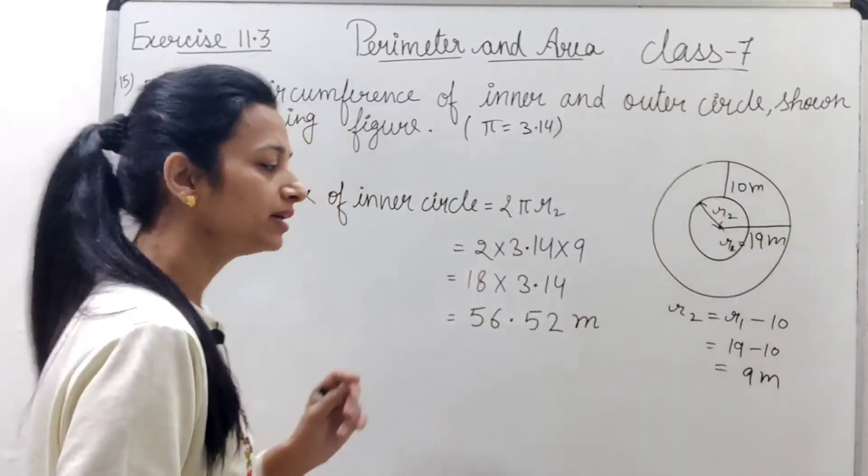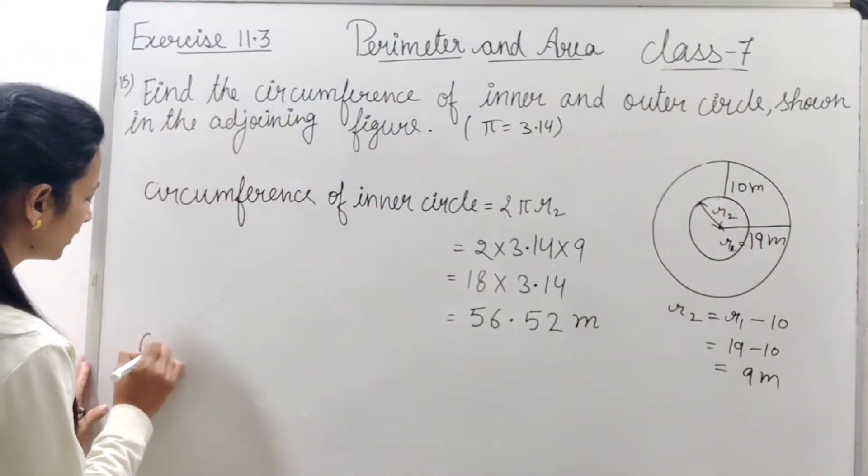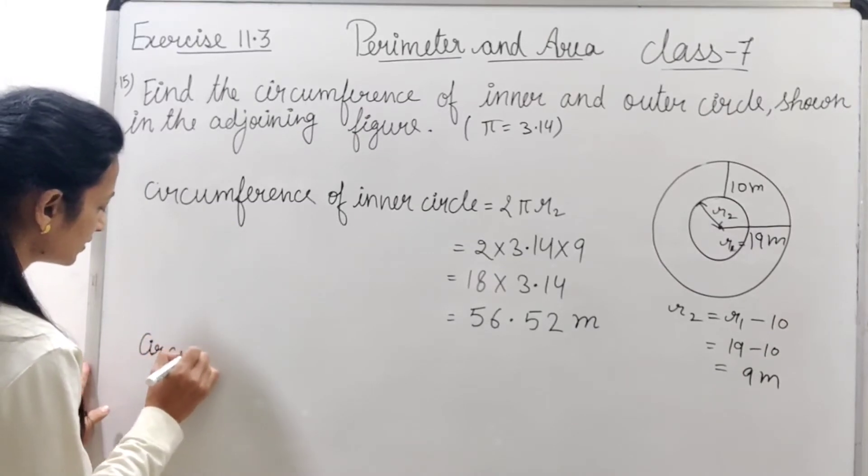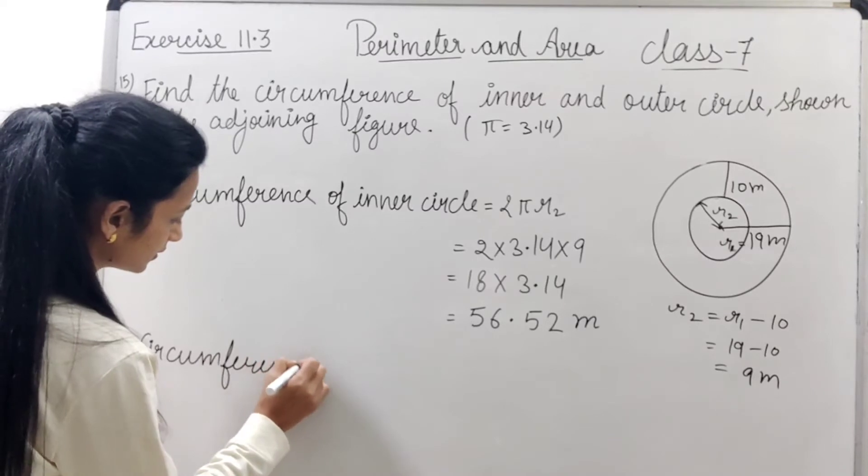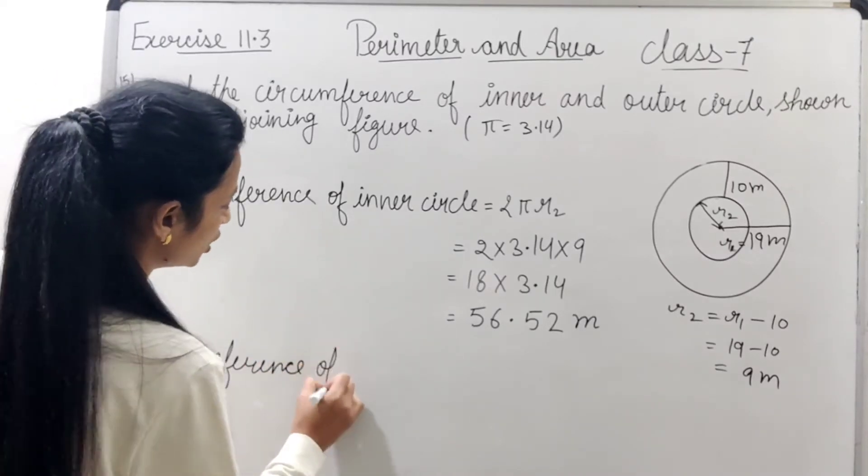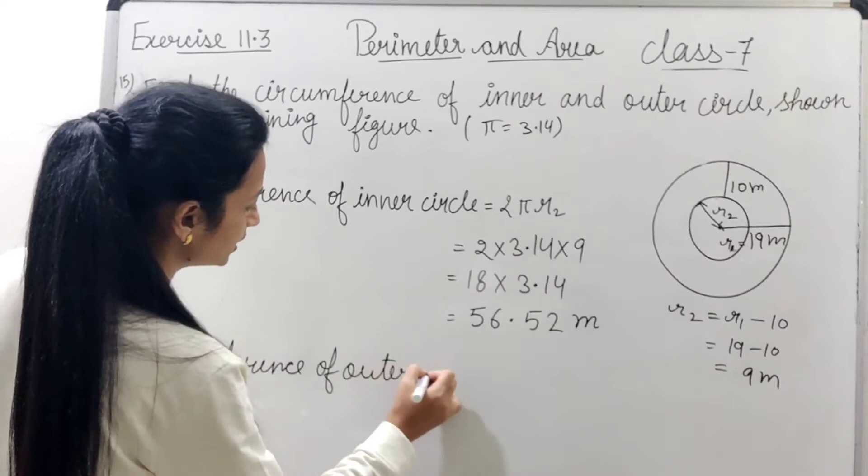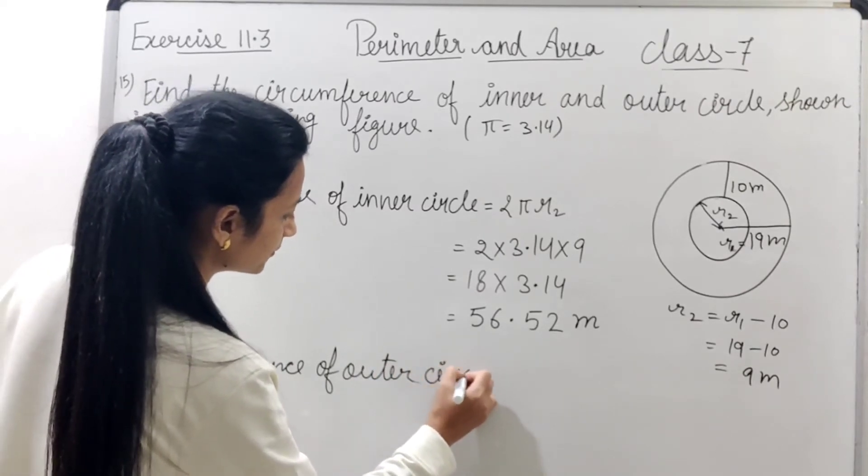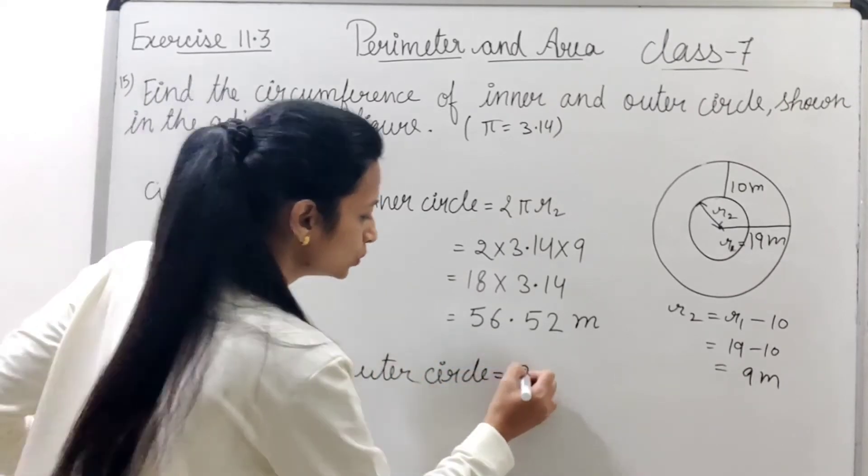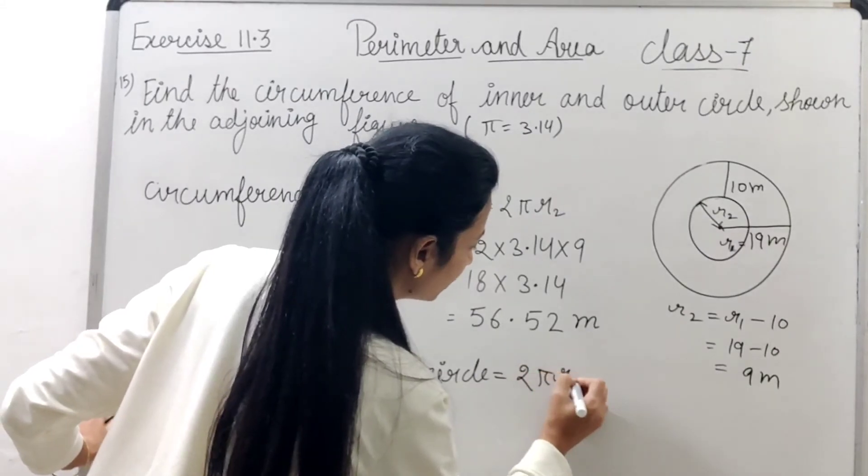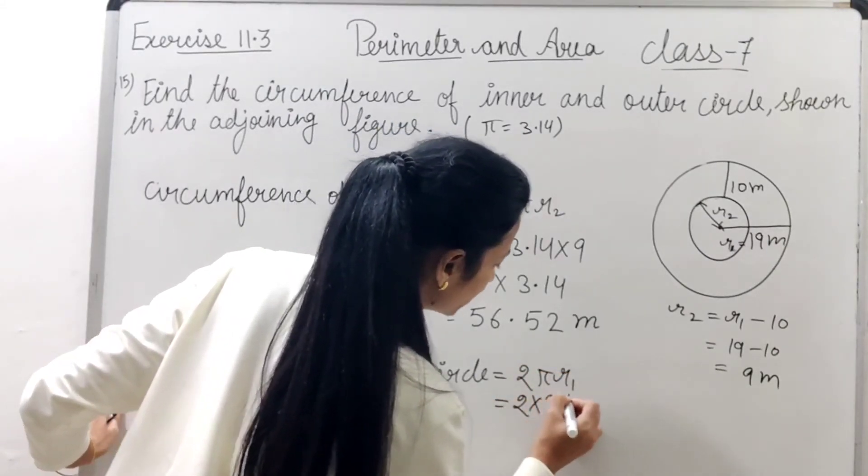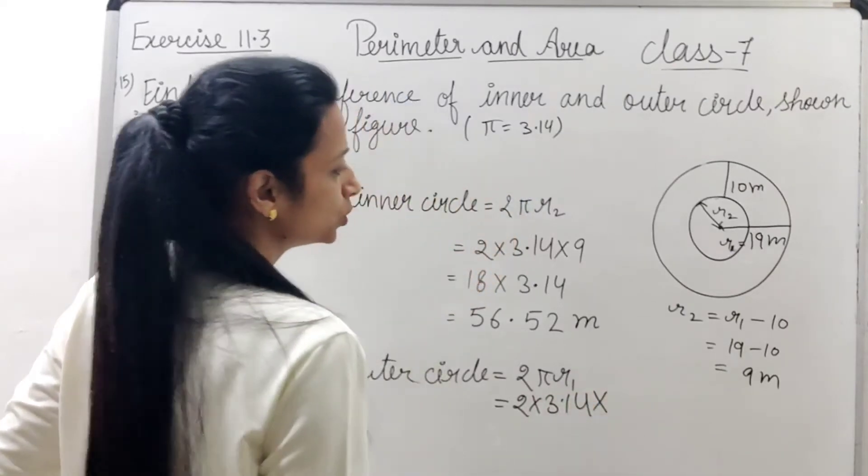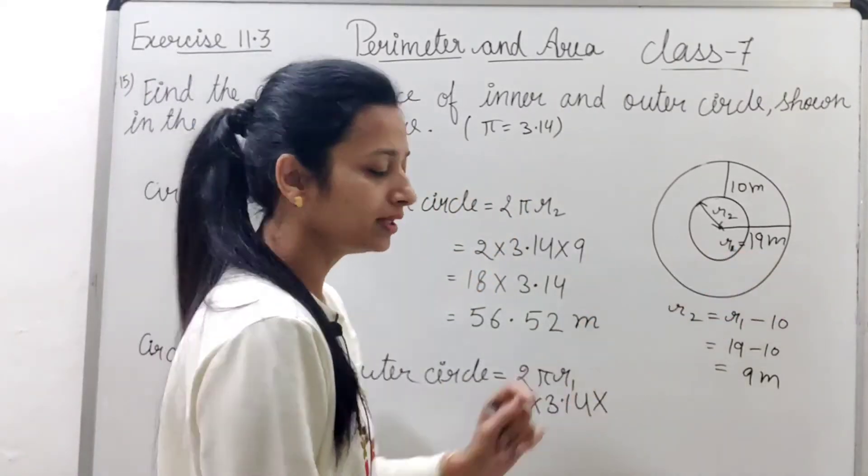अब outer circle की भी ऐसे ही find कर लेंगे. तो लिखेंगे circumference of outer circle equals to 2πR1, which is 2 into 3.14 into R1 कितना है? 19.